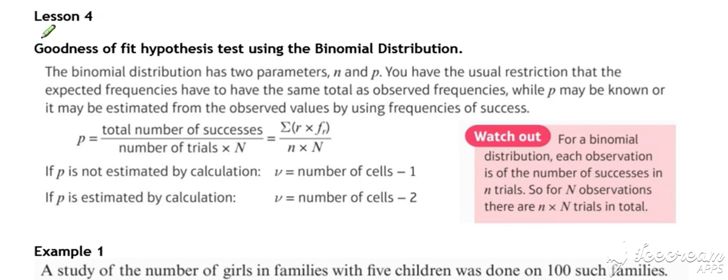So now we've got the procedure in place for the chi-squared hypothesis test, or the goodness-of-fit hypothesis test. We can now look at how we can use it to test whether some of our known distributions are appropriate models for given situations.